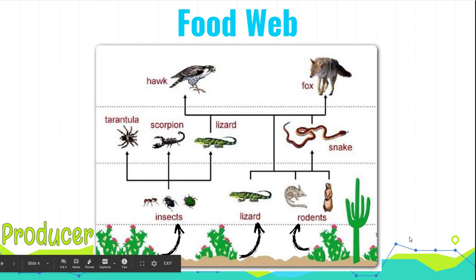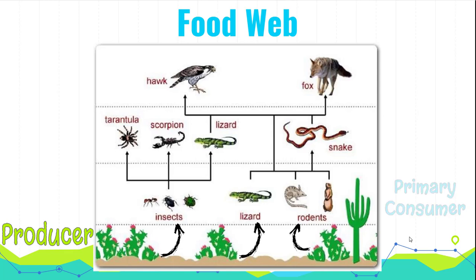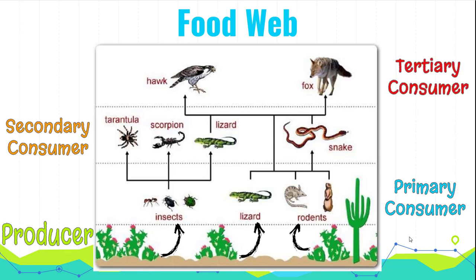The bottom-most level is your producers, and your producers are your things that are making their own energy from the sun through photosynthesis, most likely plants. You have your primary consumers that are eating your producers. You have your secondary consumers that are eating your primary consumers. And then you have your tertiary consumers that are eating your secondary consumers.